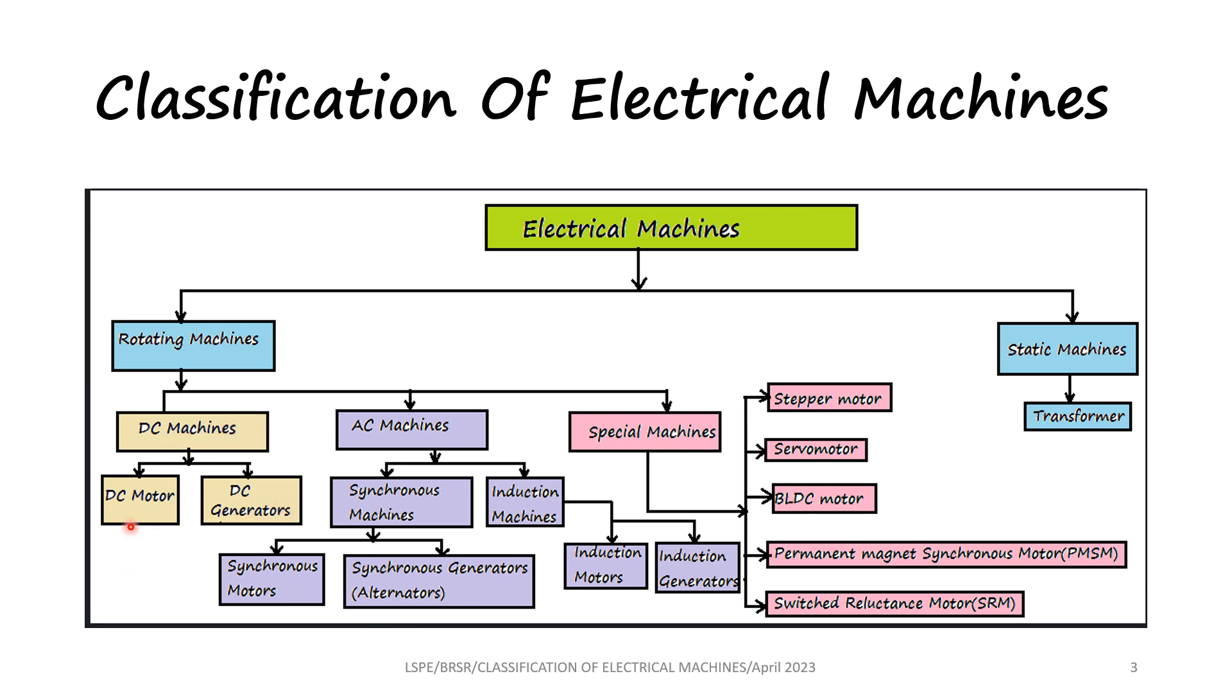By a machine, we mean a motor or a generator. So DC machine can be a motor or a DC generator. Similarly, AC machines can be AC motors or AC generators. Under AC machines, we have two broad classifications: synchronous machines and induction machines.